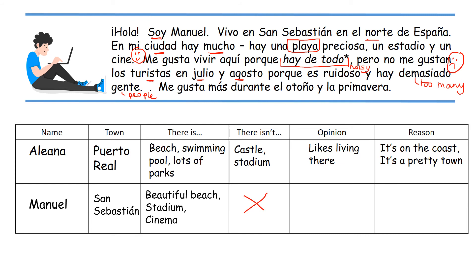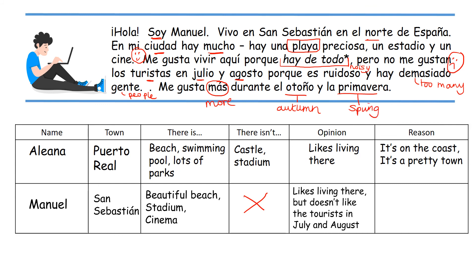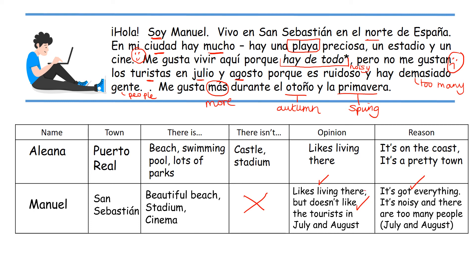Me gusta más durante el otoño y la primavera — he likes it more during autumn and spring. So he gives two opinions: he likes living there because it has everything, but doesn't like it in July and August because it's noisy and there are too many tourists. Score out of nine: Manuel, San Sebastián, beautiful beach, stadium, cinema, likes living there, it's got everything, doesn't like tourists, noisy and too many people.